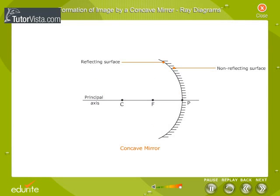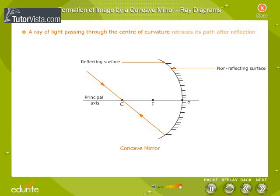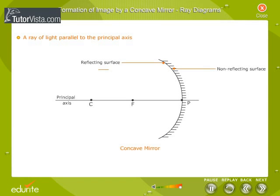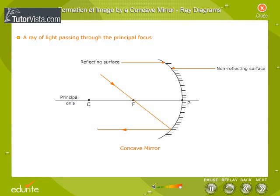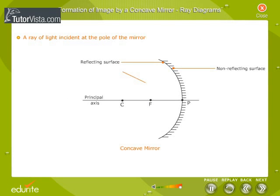Shown here are the rays that are generally considered while constructing ray diagrams. A ray of light passing through the center of curvature retraces its path after reflection. A ray of light parallel to the principal axis after reflection passes through the focus. A ray of light passing through the principal focus emerges parallel to the principal axis after reflection. A ray of light incident at the pole of the mirror gets reflected according to the laws of reflection.